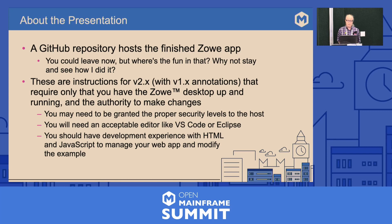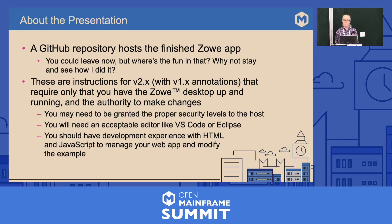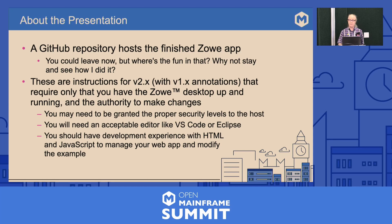These are instructions for version 2 with annotations for version 1 that require only that you have the Zoe desktop up and running and the authority to make changes. You may need to be granted the proper security levels to the host. You will need an acceptable editor like VS Code or Eclipse. You should have development experience with HTML and JavaScript, manage your web app, and to modify the example.